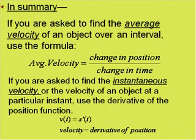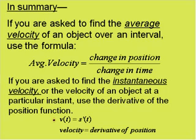In summary, if you are asked to find the average velocity of an object over an interval, use the formula: average velocity equals change in position over change in time. If you are asked to find the instantaneous velocity — the velocity at a particular instant — use the derivative of the position function: v of t equals s prime of t.